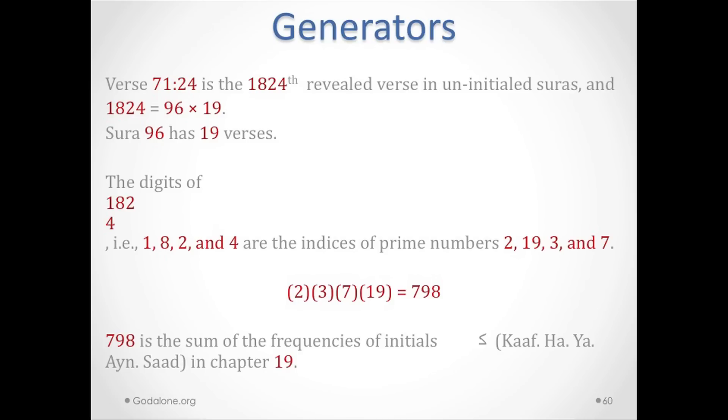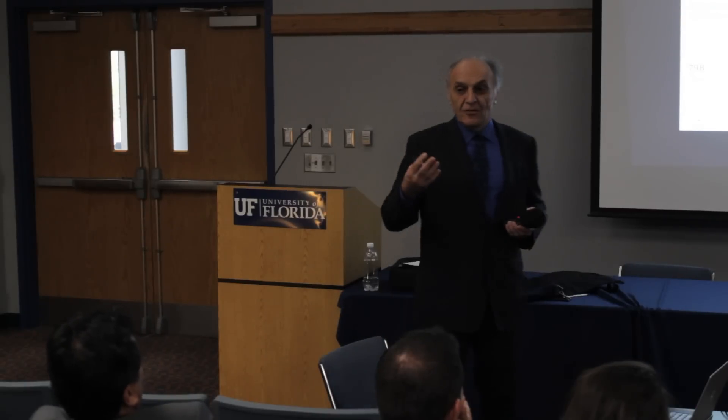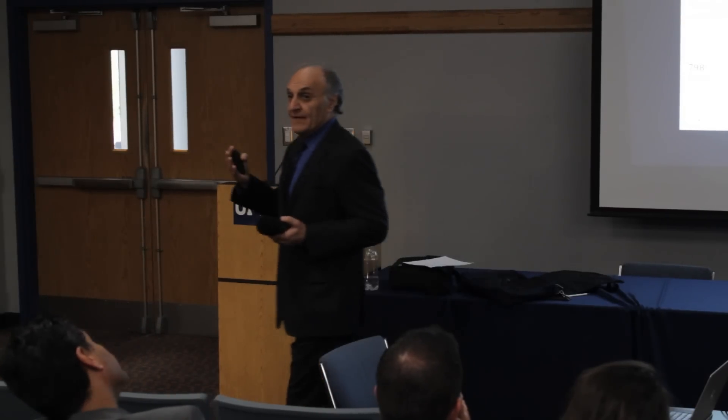These numbers—2 times 3 times 7 times 19—equals 798, which is the sum of the frequency of the initials in chapter 19. So you see, those four digits, 1-2-4-7, give you so much information about the structure of the Quran.